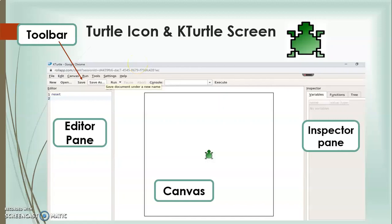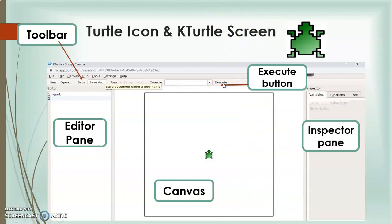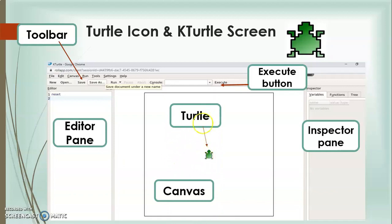It also has the console text box. Here you can enter a one-line command and press the Enter key or click the Execute button to run it. This is the Execute button. Whenever we give the turtle an instruction, we press the Execute button to see what the turtle has drawn. And this is the turtle.